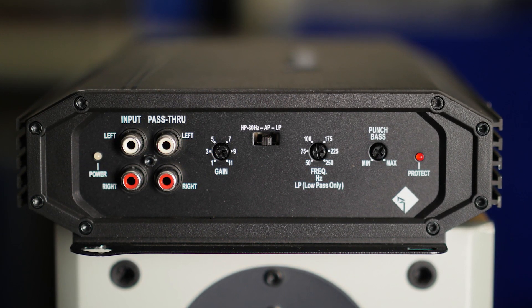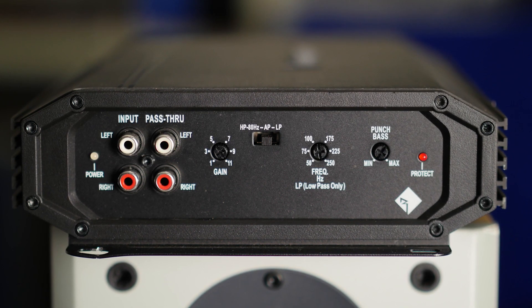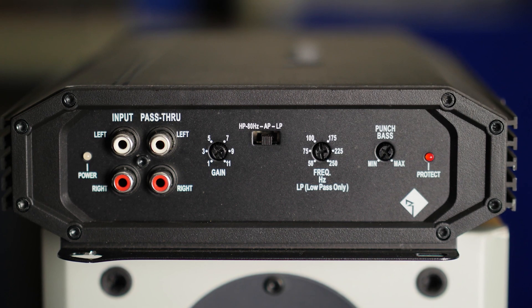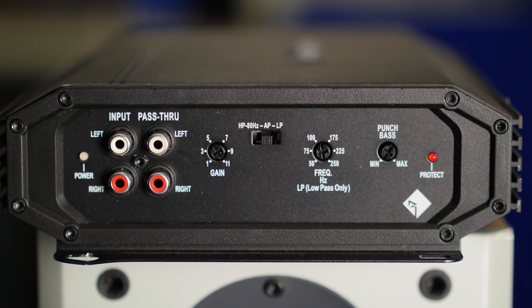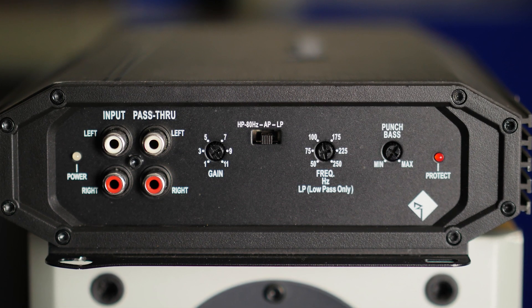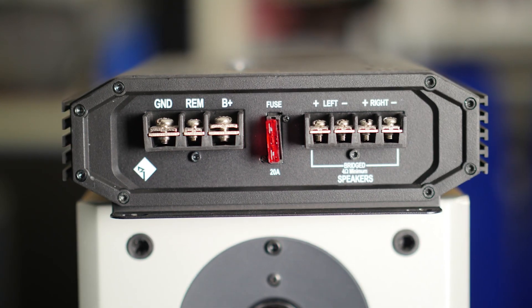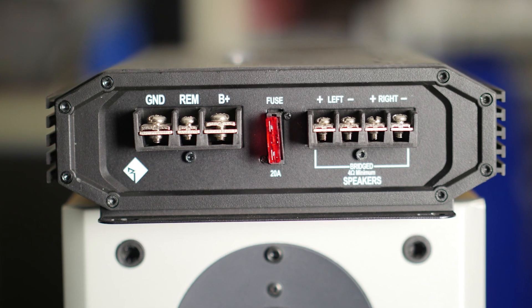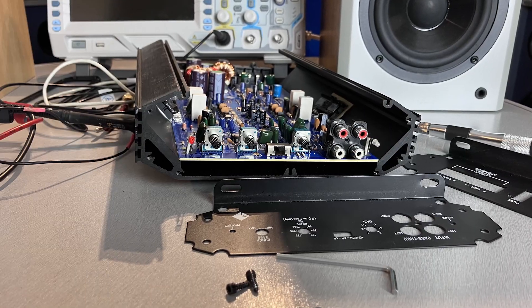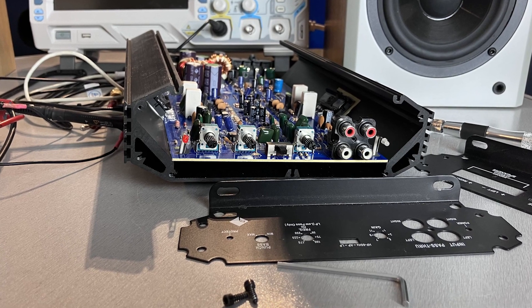The amplifier has adjustable voltage from 2 to 8 volts and includes a punch bass boost of 12 dB at 45 Hertz. The high pass filter is fixed and the low pass filter is variable from 50 Hertz to 250 Hertz. The speaker terminals are screw terminals, as are the power input and grounds.